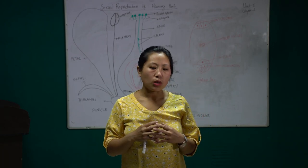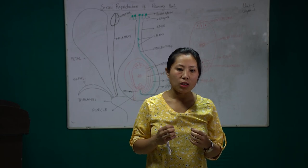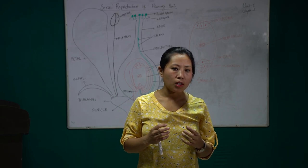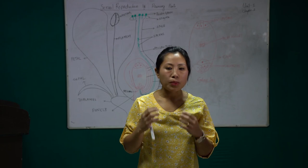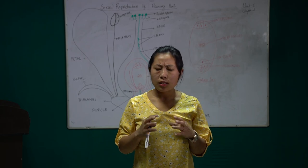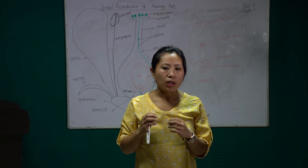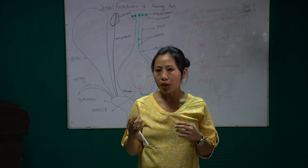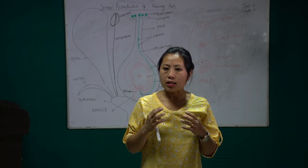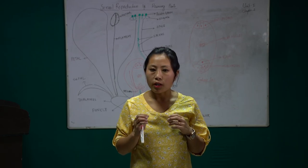The sperm is produced in the testis and the egg or ovum is produced in the ovary. Prior to fertilization, the sex cells have to be formed in their respective reproductive structures. The sperm is formed in the male parent and the egg or ovum is formed in the female parent.